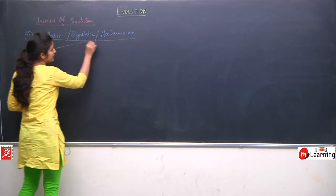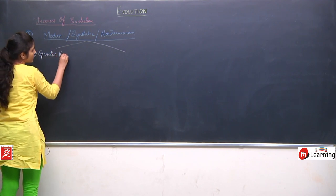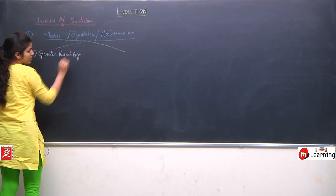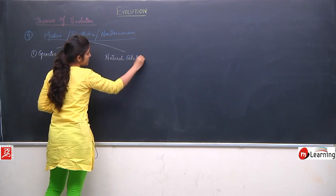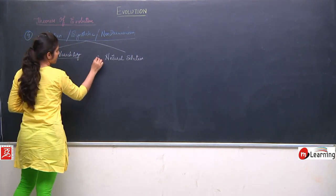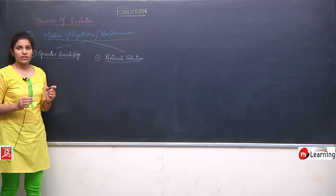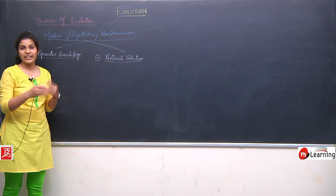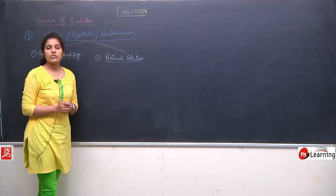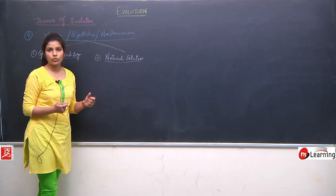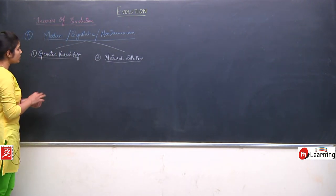There are two postulates of this theory. The first one is genetic variability and the second one is natural selection. Genetic variability means the change in the genetic structure or some kind of variations, and natural selection means the organism which is best suited or best adapted to the environment will be selected by nature. This is called natural selection. First, we will discuss genetic variability.